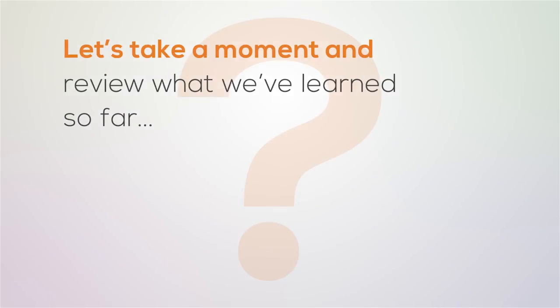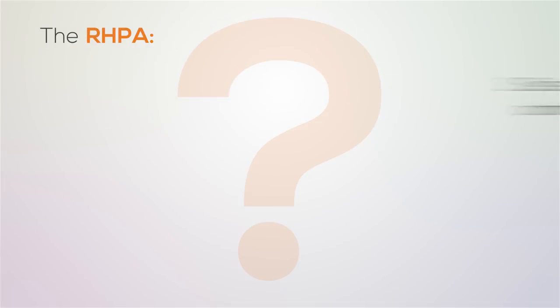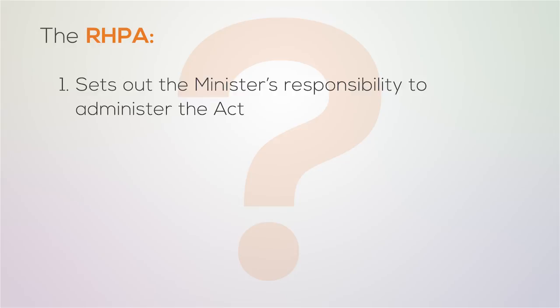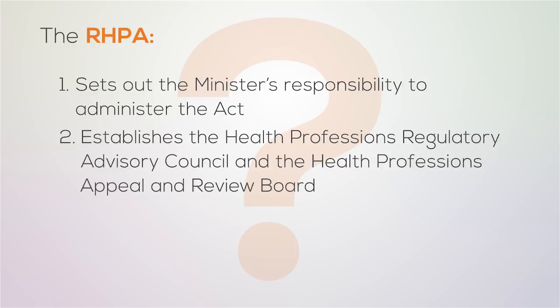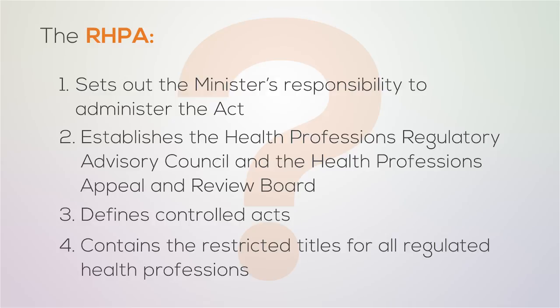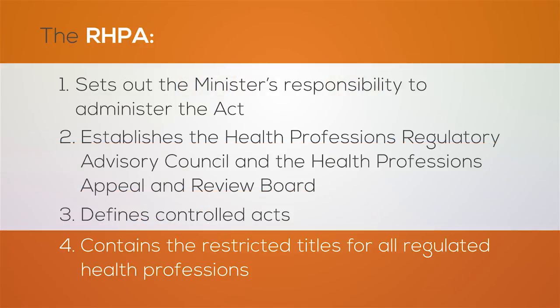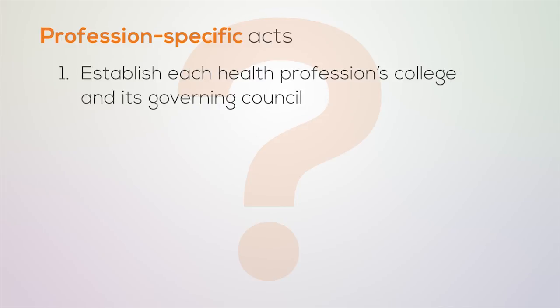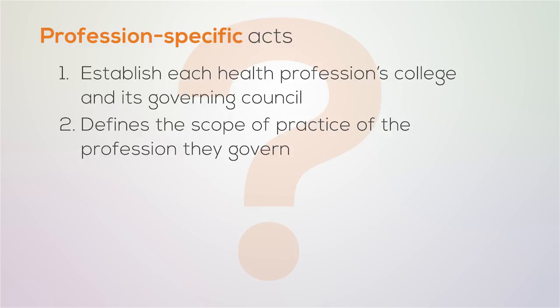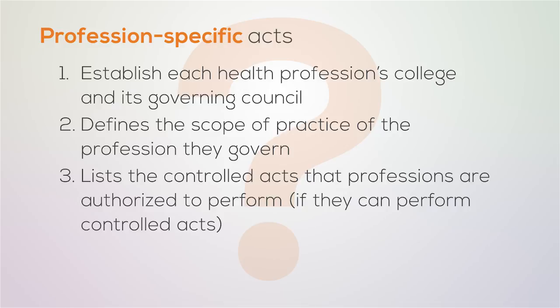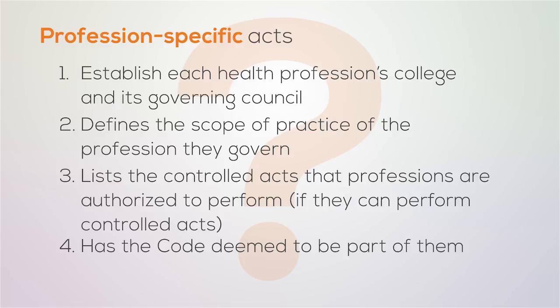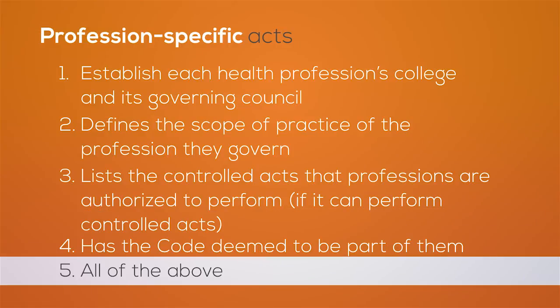Let's take a moment and review what we've learned so far. Which of the following does the RHPA do? It sets out the Minister's responsibility to administer the Act, establishes the Health Professions Regulatory Advisory Council and the Health Professions Appeal and Review Board, and defines Controlled Acts — or does it contain the restricted titles for all regulated health professions? The answer is the first, second, and third points. For the next question: profession-specific acts establish each health profession's college and its governing council, define the scope of practice of the profession they govern, list the controlled acts that professions are authorized to perform, have the Code deemed to be part of them — or all of the above? The best answer is all of the above.